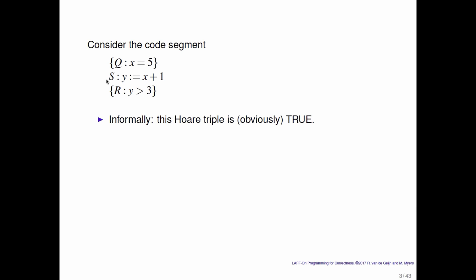There are a couple of ways of answering that question. You would informally say, well, by just looking at it, it's obviously true. If x is equal to 5, then y will become 6, and 6 is obviously greater than 3.